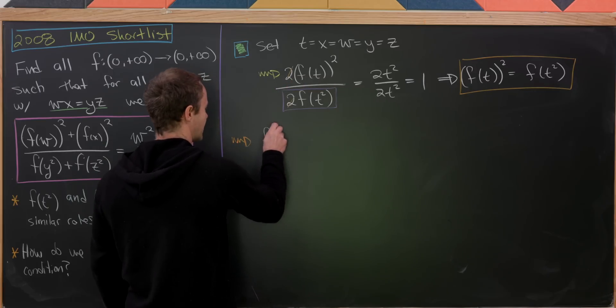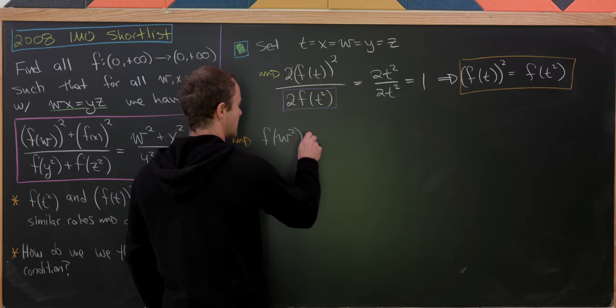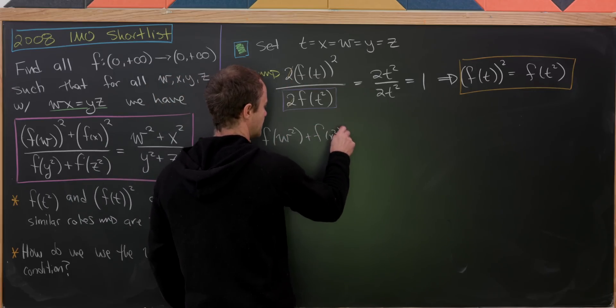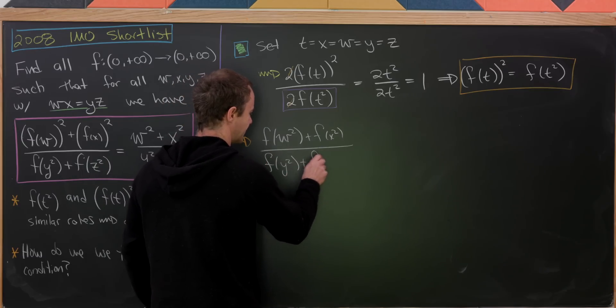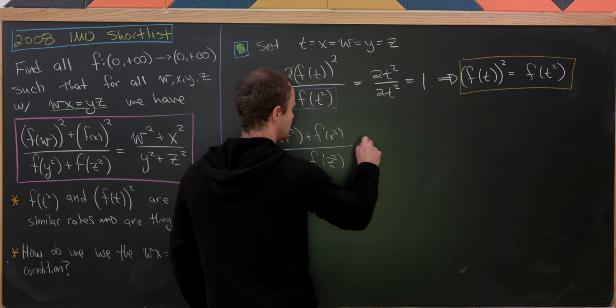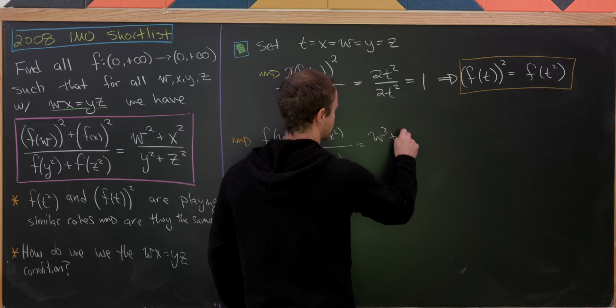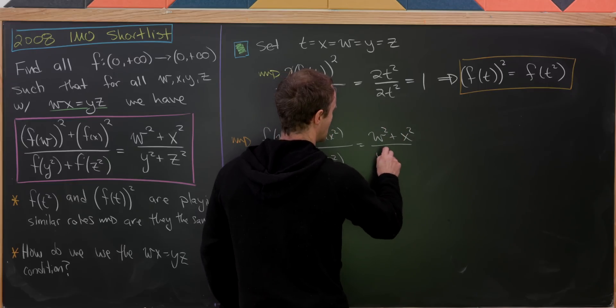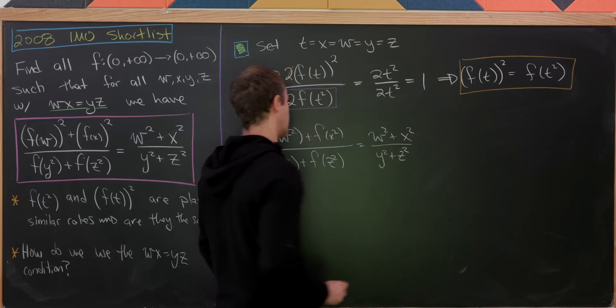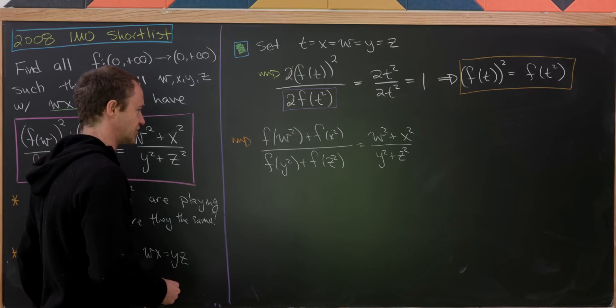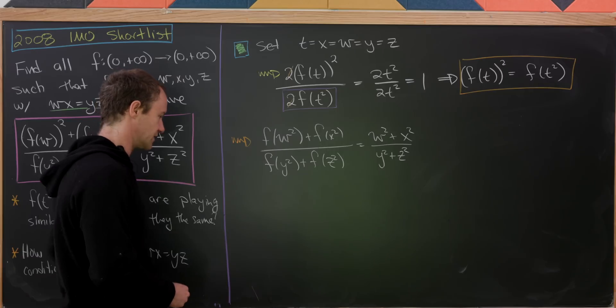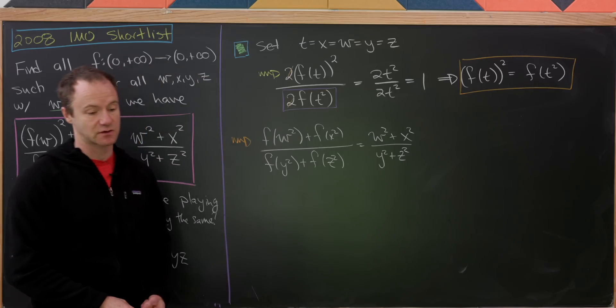So now our equation looks like this. We have f(w²) plus f(x²) over f(y²) plus f(z²) equals w² plus x² over y² plus z². But now everything is just squared there and that really raises the question: why do we have to work with these squares in the first place if everything is squared?